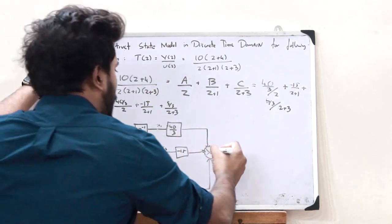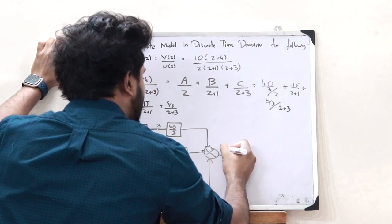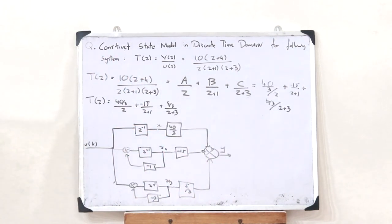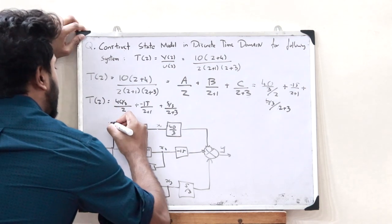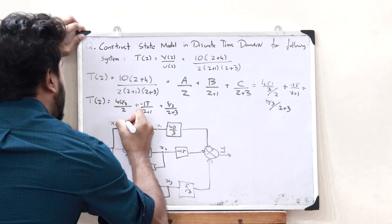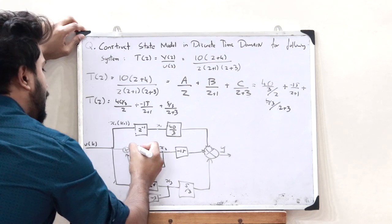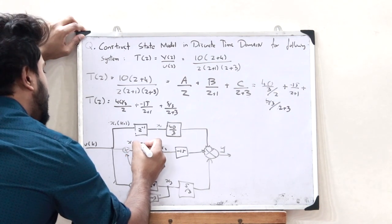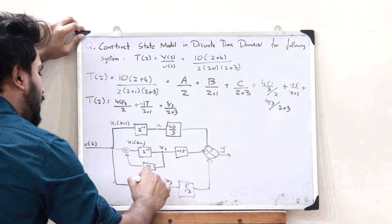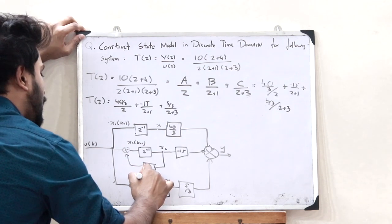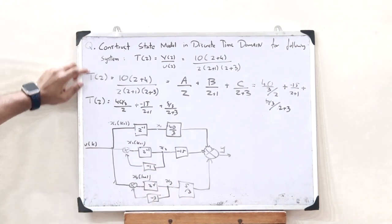At the output we get Y. This is the block diagram of this particular transfer function. The outputs of the delay elements are labeled: X1 of K+1, X2 of K+1, and X3 of K+1.